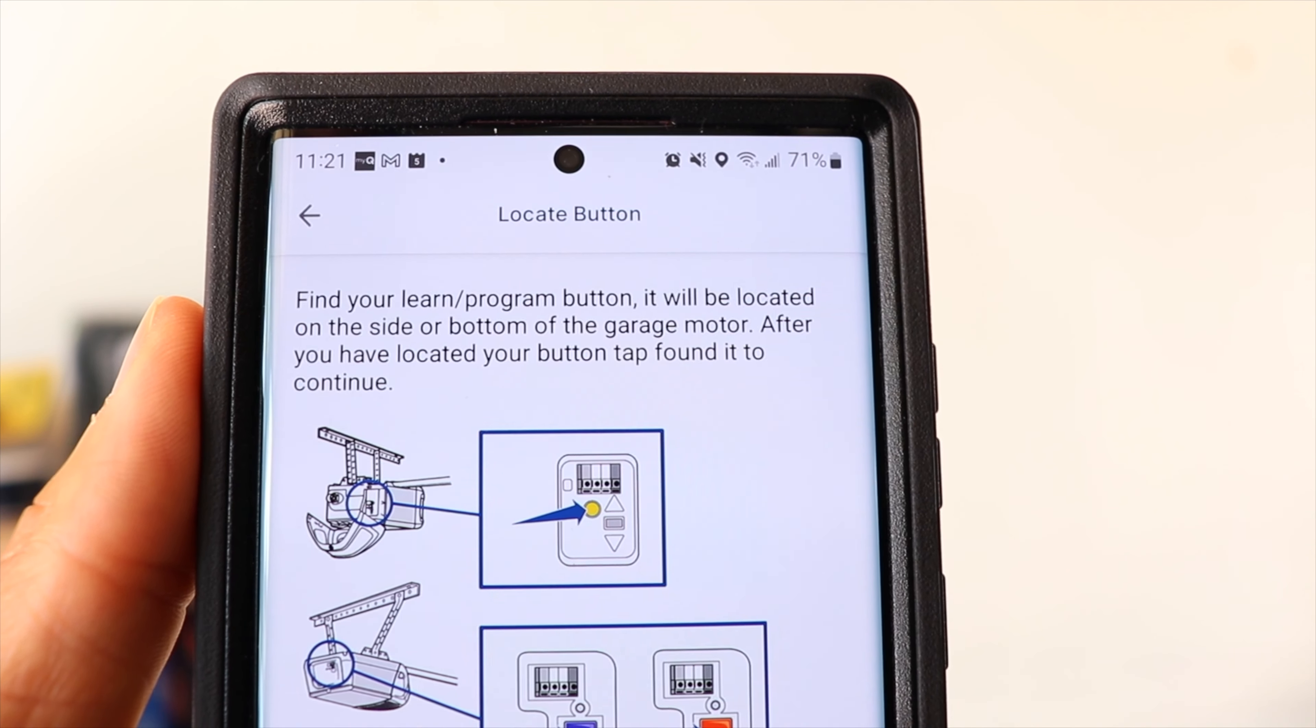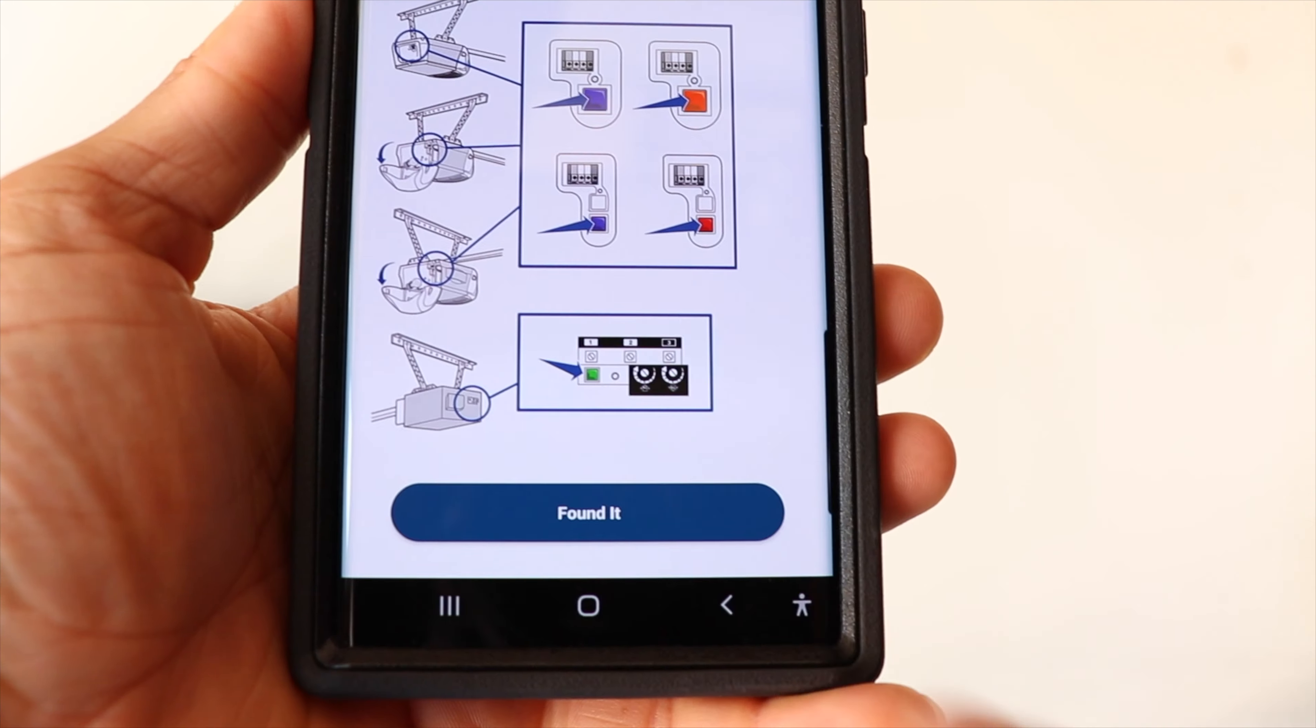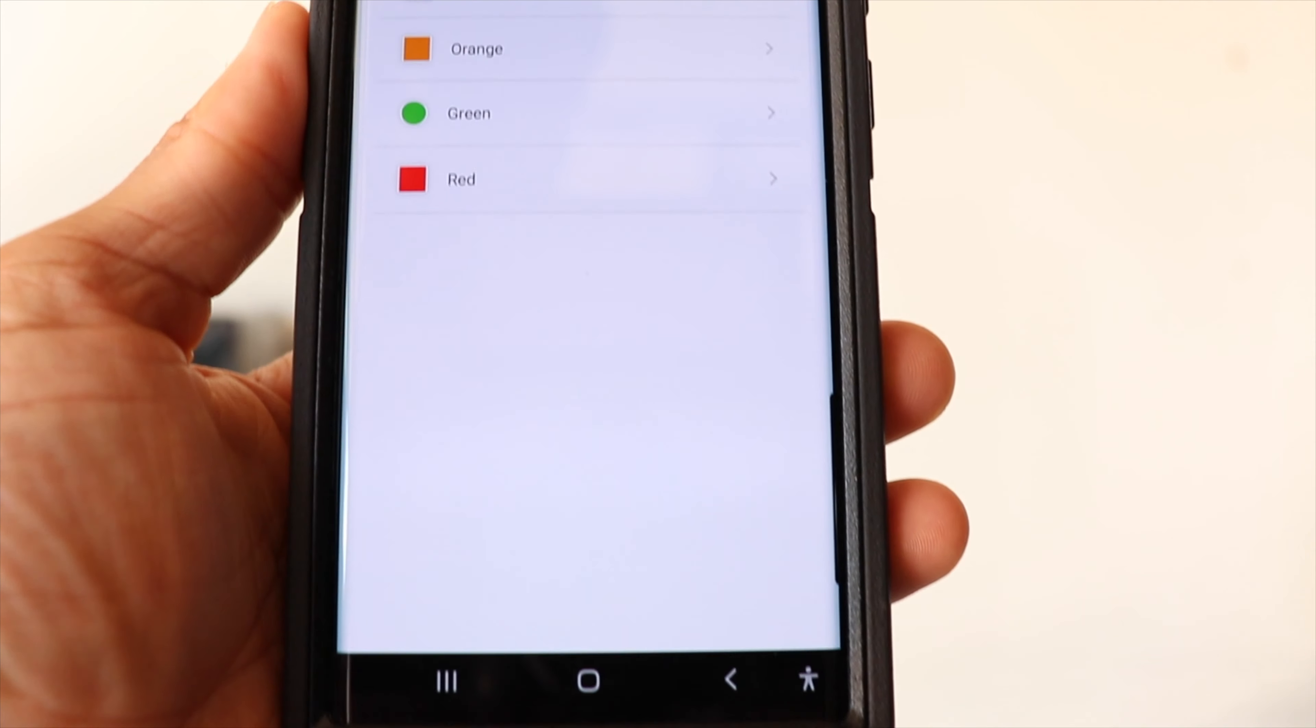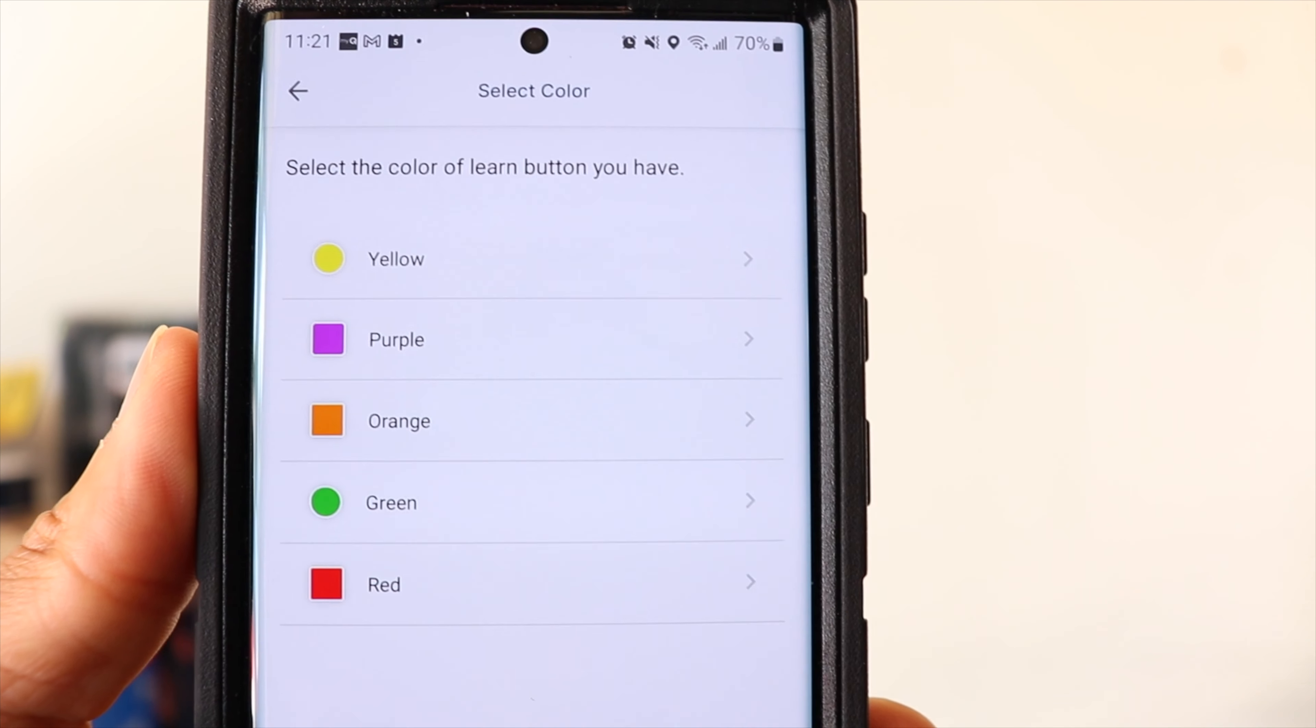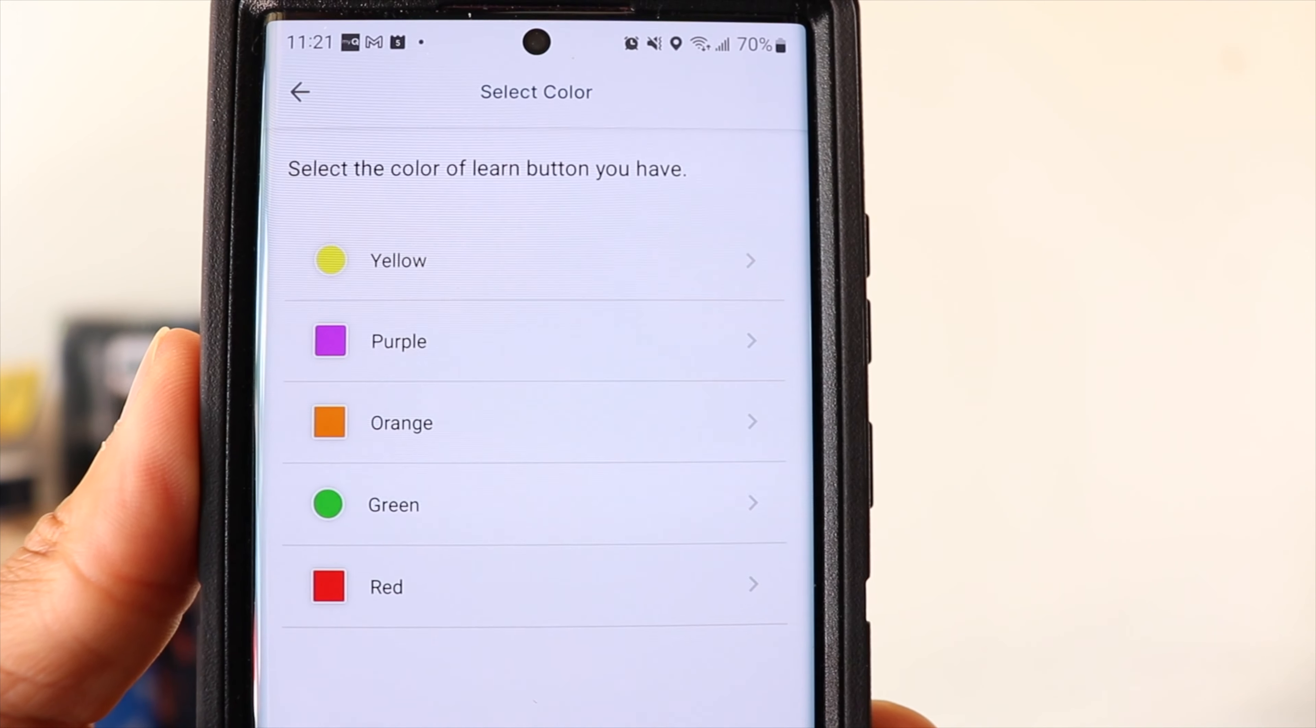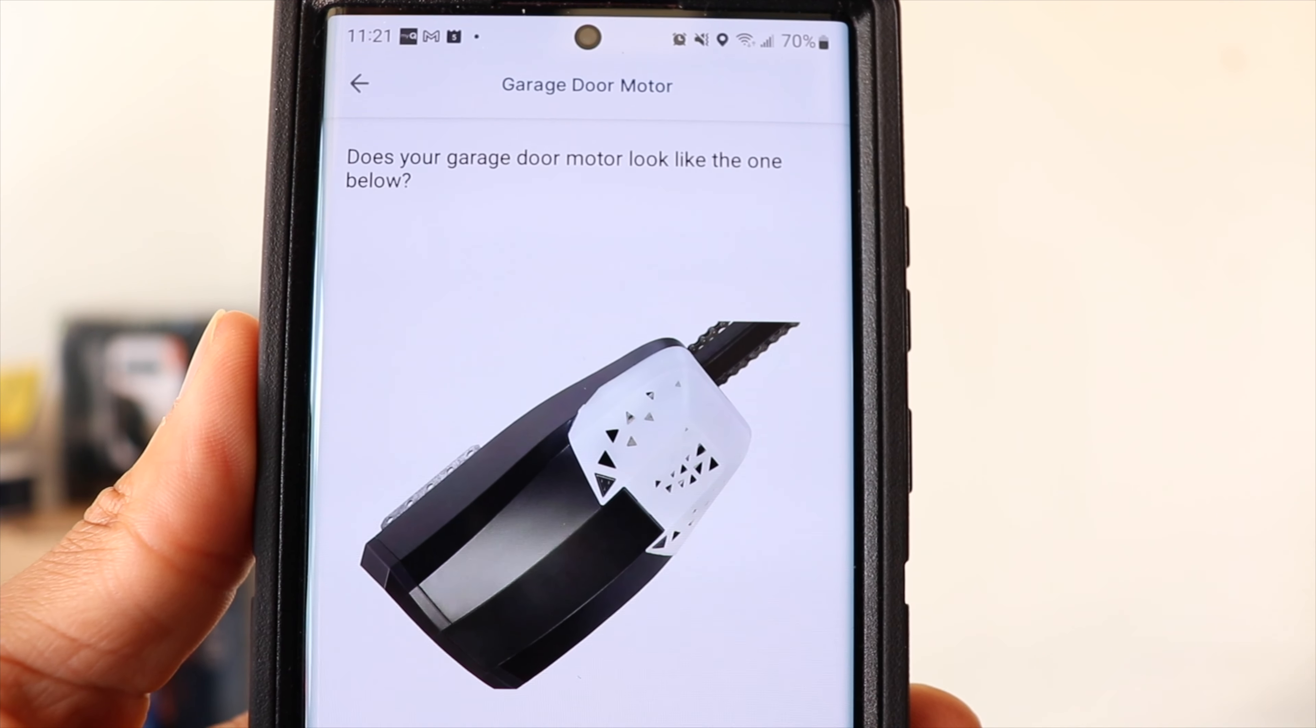After that, you want to locate the program button, which is usually found on the back of your garage door opener. Once you found it, you want to select the color of the program button. Mine is yellow, but yours could be a different color depending on what type of opener you have.